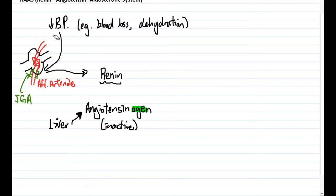However, when you experience a drop in blood pressure, JGA will now release the renin in response, and in the presence of renin, angiotensinogen is going to be activated into angiotensin number one.